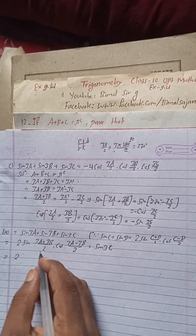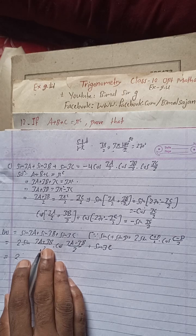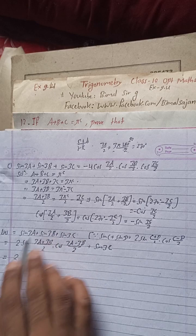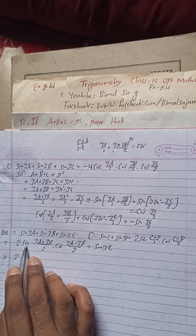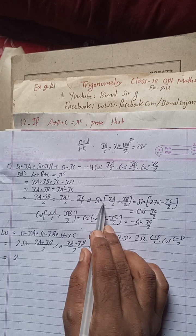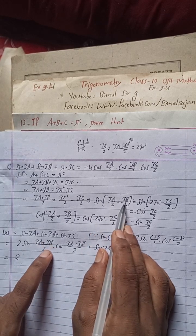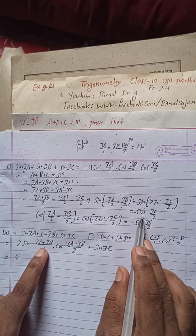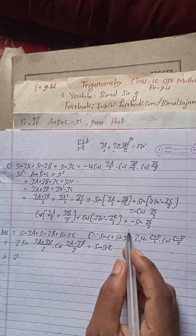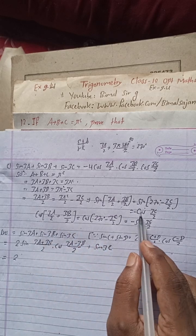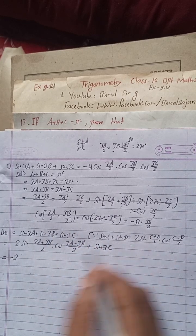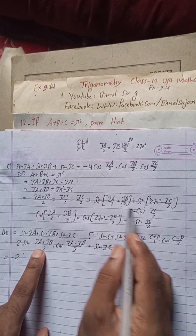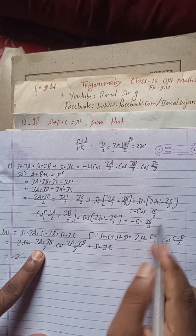Now 3a + 3b is the same as what we derived earlier. For sin((3a+3b)/2), I substitute the result: sin((3a+3b)/2) = -cos(3c/2). So this becomes 2 × (-cos(3c/2)) · cos((3a-3b)/2) + sin3c, which equals -2 cos(3c/2) · cos((3a-3b)/2) + sin3c.